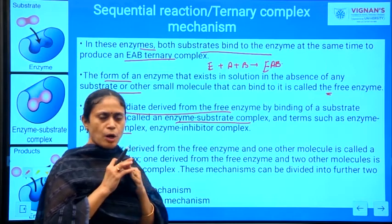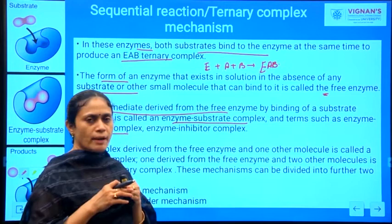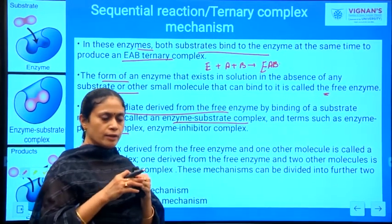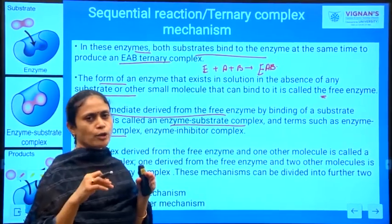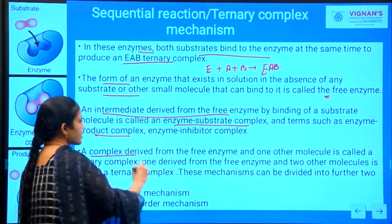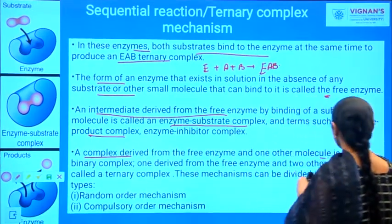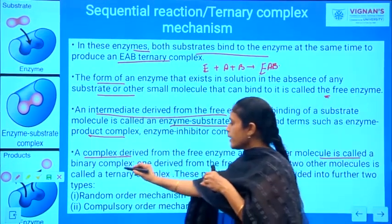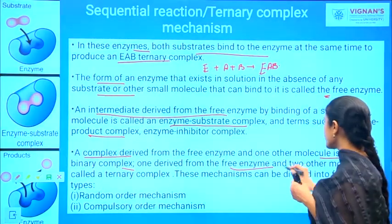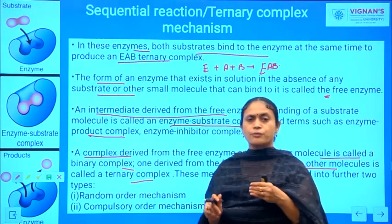After the enzyme-substrate complex is formed, there is a formation of products. We consider the complex of enzyme-product complex, and after that there is a release of product molecules. A complex derived from the free enzyme and one other molecule is called a binary complex.